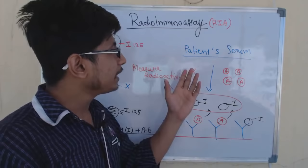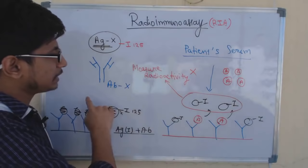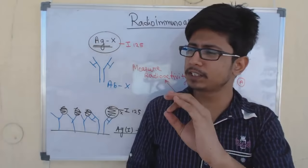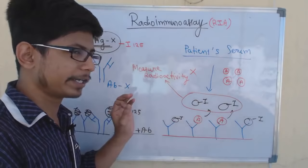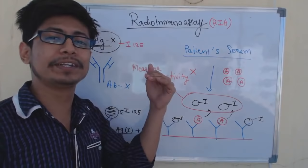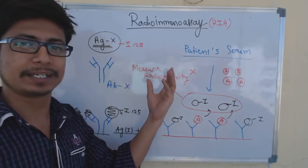If patient serum does not contain any antigen, there will be no displacement, so the net change in radioactivity before and after will be negligible. This process is both qualitative and quantitative. Importantly, it is extremely specific, very targeted, and has very high sensitivity and specificity, yet the cost of this reaction is comparatively cheaper than other immunoassays.